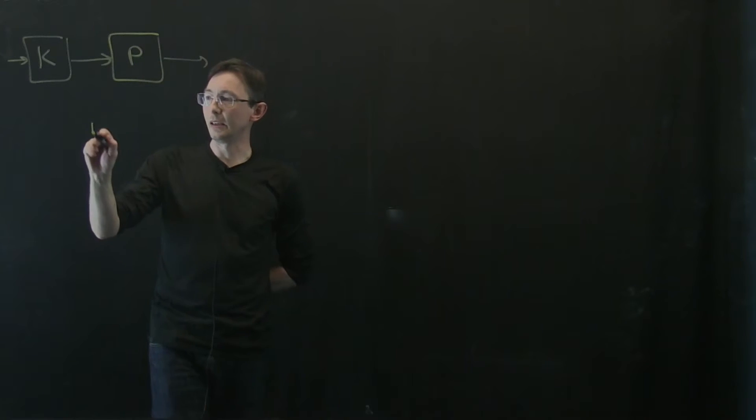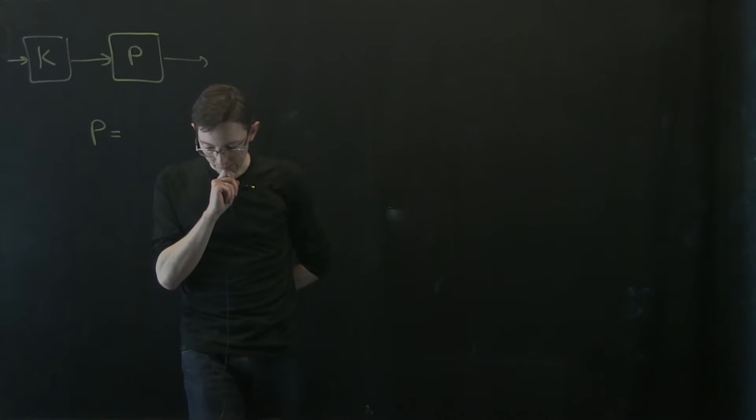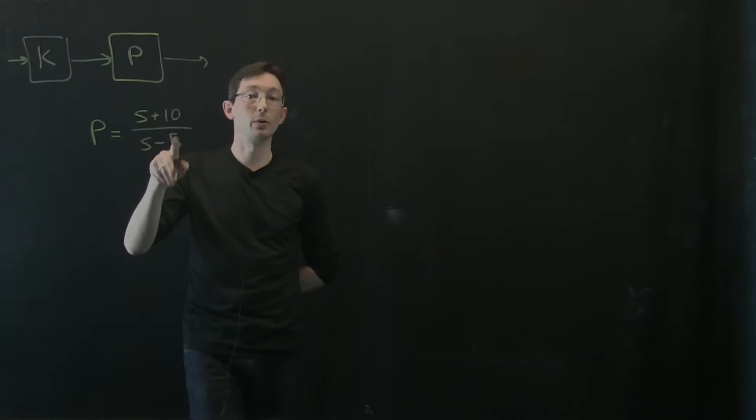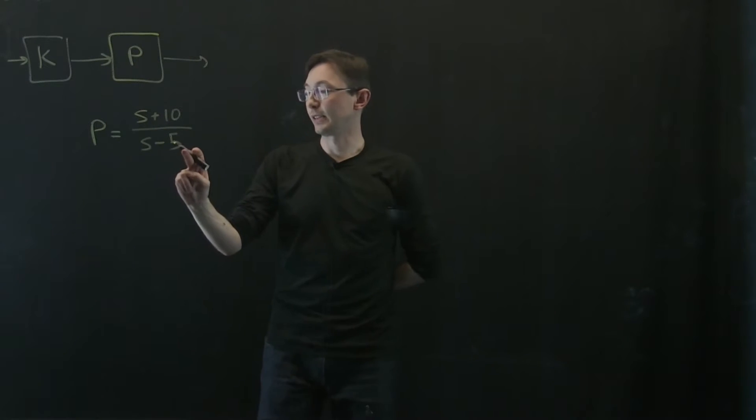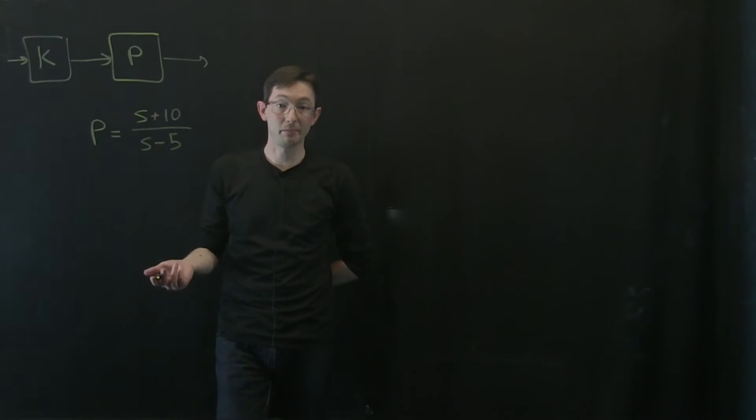Let's say that P equals S plus 10 divided by S minus 5. So we're in the Laplace transform domain. This is a system with a pole, a right half plane pole at S equals plus 5.